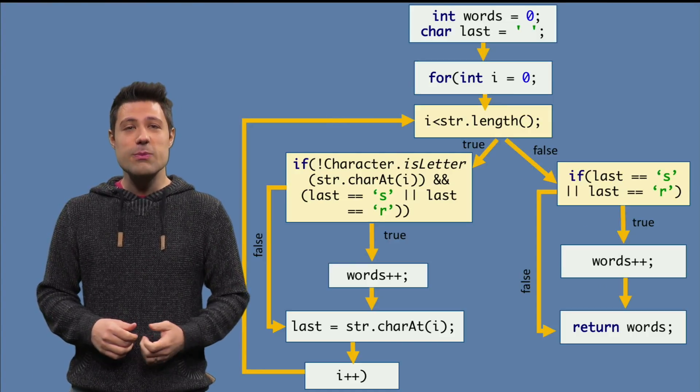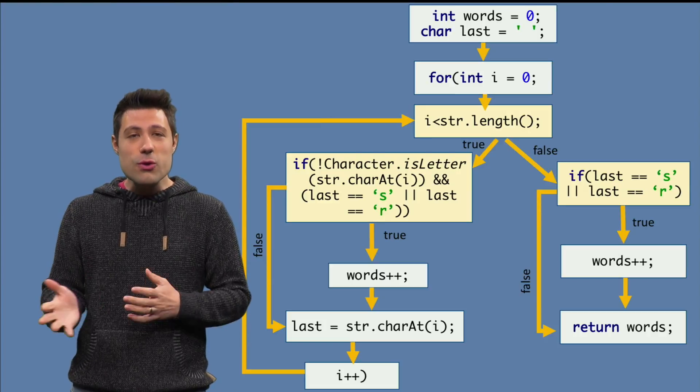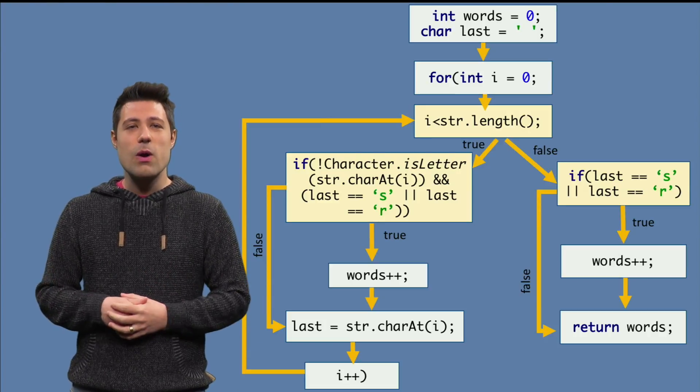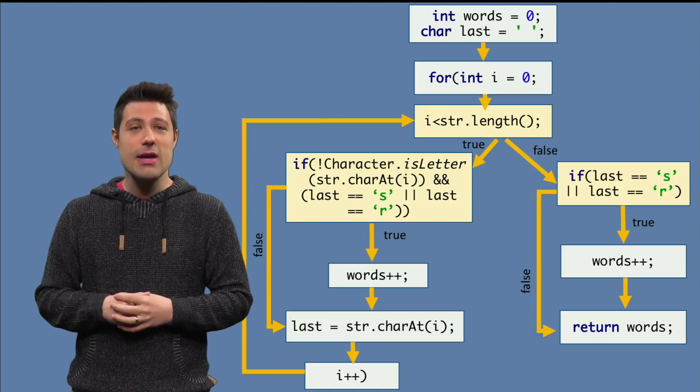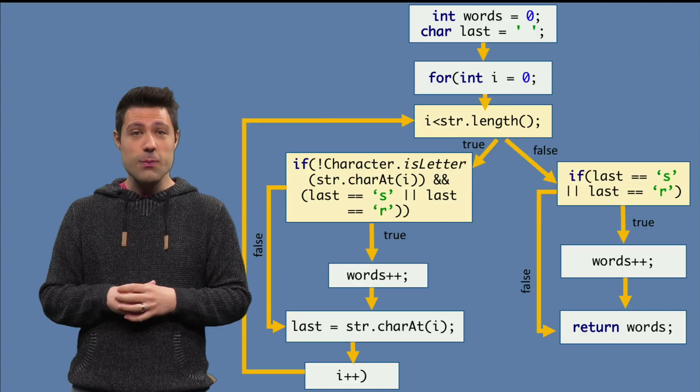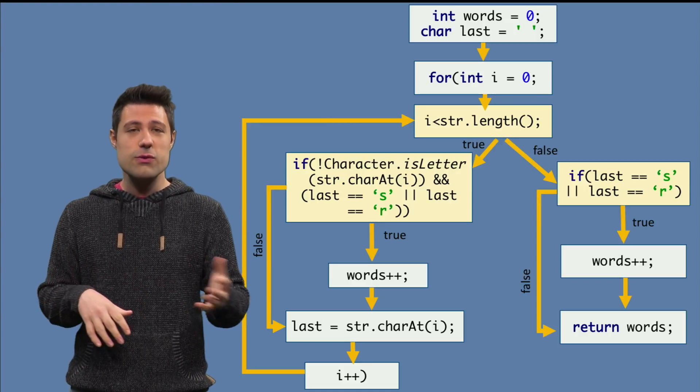So far, a decision block has two outcomes, true and false. What we kindly ignored was that a decision block can be made of multiple conditions, meaning there are different ways for that block to be evaluated to true and to false.